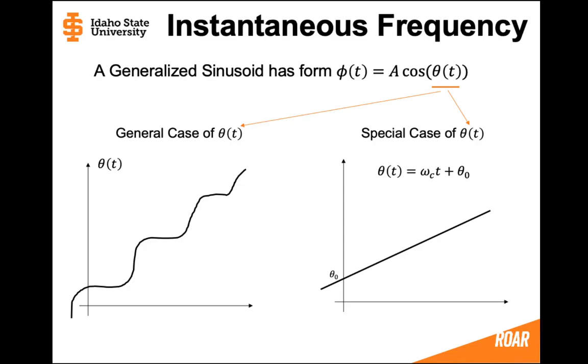On the right side, let's consider a special case of θ(t) where it's a linear line just like the ones you learned in algebra. It's equal to ωc times t plus some intercept θ0.